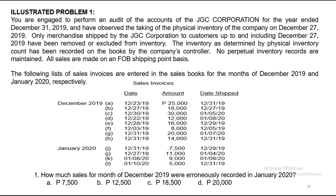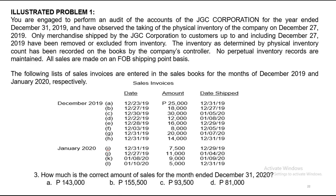The following sales invoices are entered in the sales books for December 2019 and January 2020. Question one: how much sales for December 2019 were erroneously recorded in January 2020? Question two: how much sales for January were erroneously recorded in December? Question three: what is the correct amount of sales for the month ended December 31, 2019? Since all sales are on FOB shipping point basis, upon shipment it is considered sold. If shipped on or before December 31, 2019, it is December 2019 sales; if beyond, it is January 2020 sales.